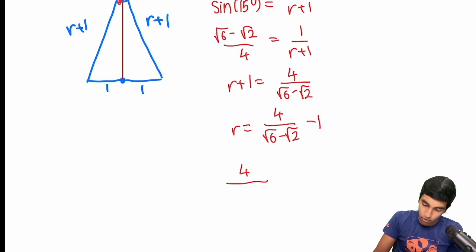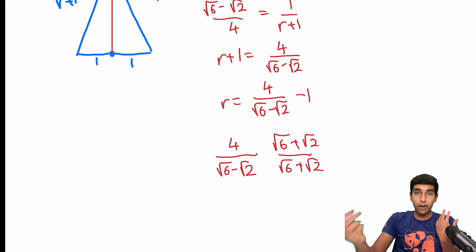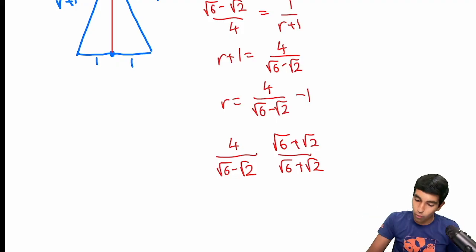And now we just rationalize. So 4 over root 6 minus root 2. And then we multiply top and bottom by root 6 plus root 2. The bottom is 6 minus 2, that's 4. And then 4 times root 6 plus root 2.